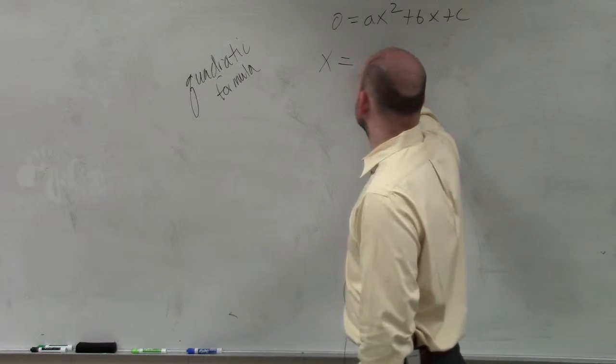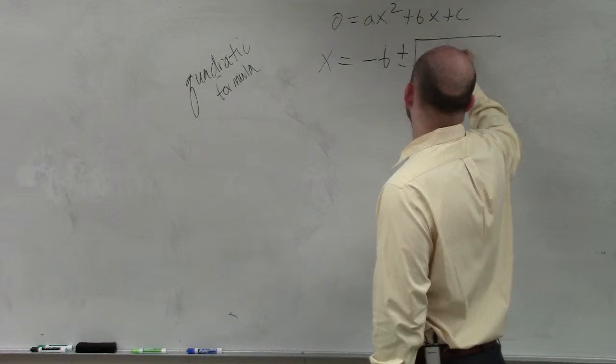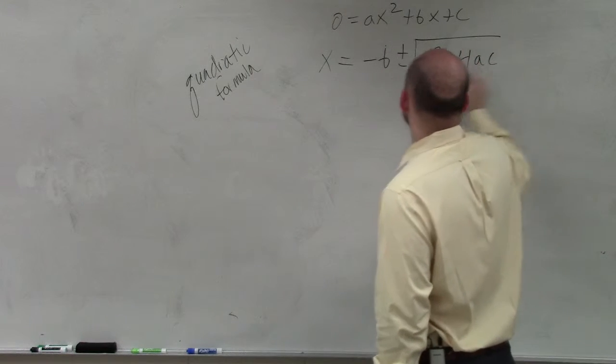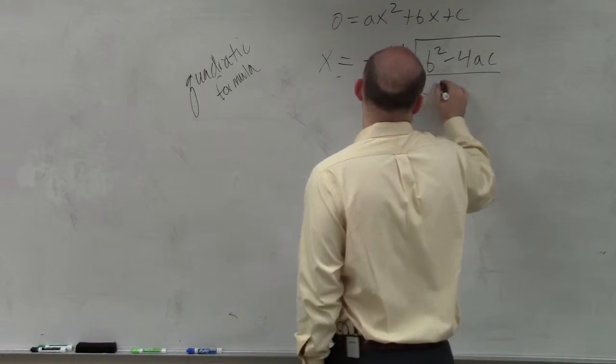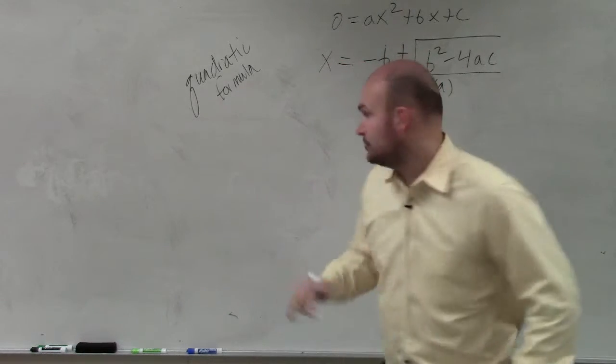And the quadratic formula simply states opposite of b plus or minus the square root of b squared minus 4 times a times c all over 2 times a. That's what your solutions equal.